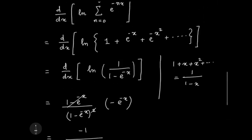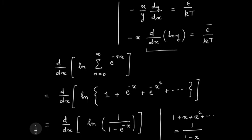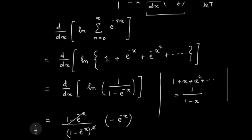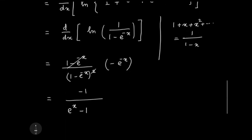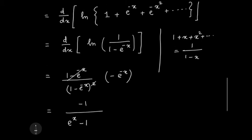So nice. So now I know what is this quantity d by dx of ln y: it is minus one by e to the x minus one.